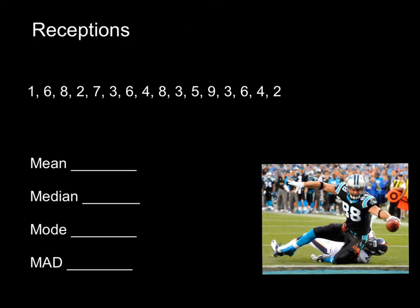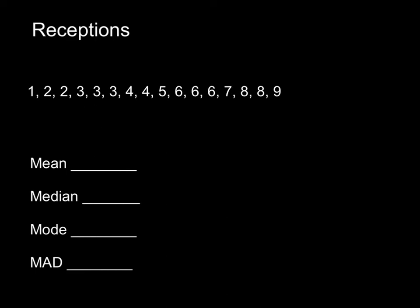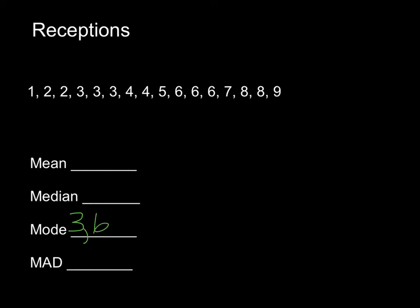For our last example, let's use the statistics for Greg Olsen, starting tight end for the 2015 NFC South Champion Panthers — also a Pro Bowler. Here we see the number of receptions he had each game. Let's list these in ascending order so we can find our mode and median more easily. Looking at the data points that occur most often, 3 and 6 both occur three times each, so they share the role of mode — 3 and 6 is our mode.